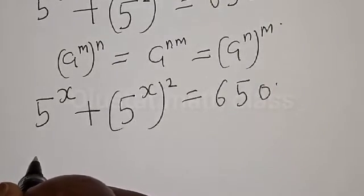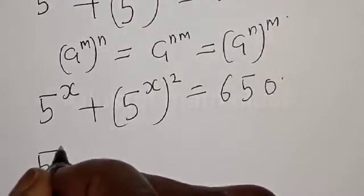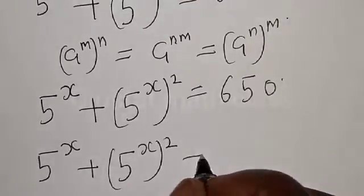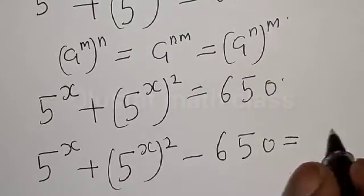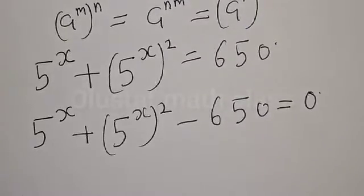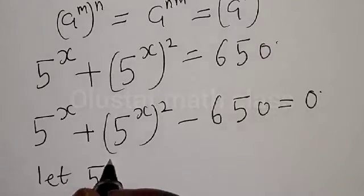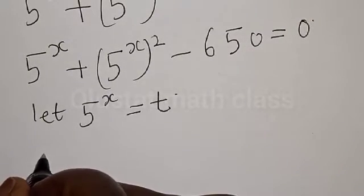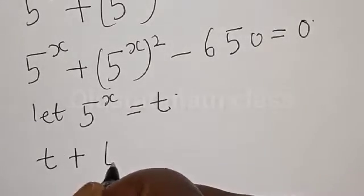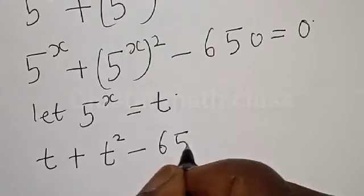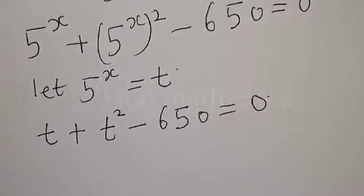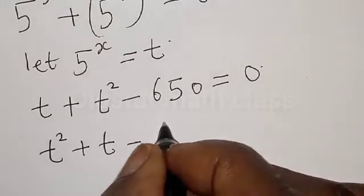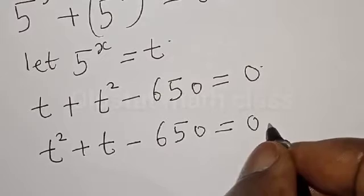Then we have 5 raised to power of s plus 5 raised to power of s all squared minus 650 is equal to 0. Now let 5 raised to power of s equal t. Then we have t plus t squared minus 650 is equal to 0. Rearranging, we have t squared plus t minus 650 is equal to 0. This is a quadratic equation.